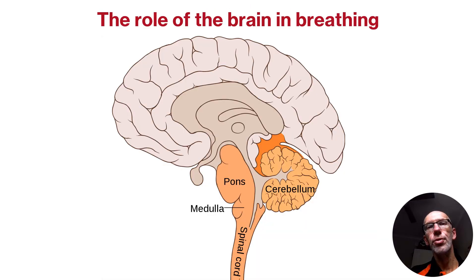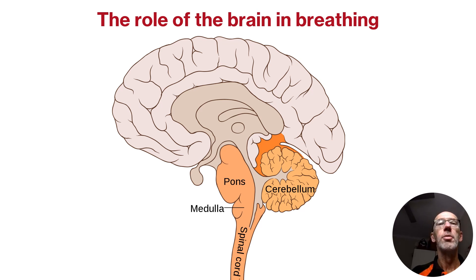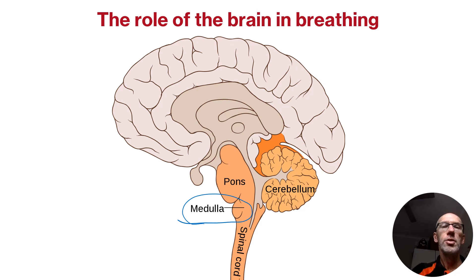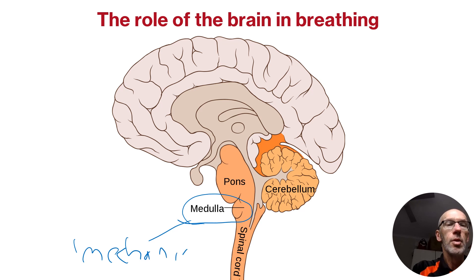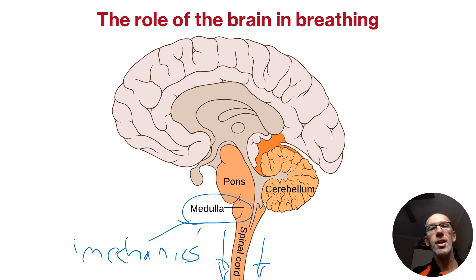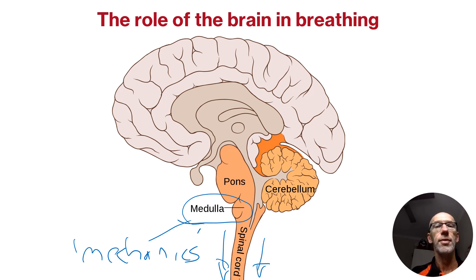There are two key brain structures that play a major role in the breathing process. The medulla basically deals with the mechanics of breathing by sending messages down the nervous system to the key muscles that regulate the breathing process, namely the intercostal muscles and the diaphragm.